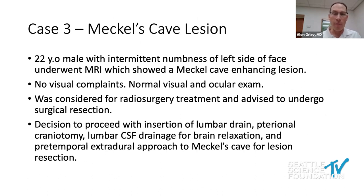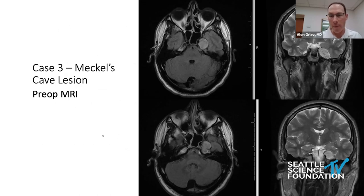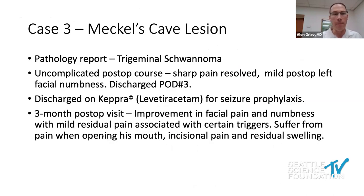I was fortunate to assist Dr. Litvak in a case involving a 22-year-old male with intermittent numbness on the left side of his face. MRI showed a Meckel's cave enhancing lesion — no visual complaints, normal visual and ocular exam. He was considered for radiosurgery but then advised to undergo surgical resection. The decision was to proceed with craniotomy, insertion of a lumbar drain for CSF drainage to achieve brain relaxation, and then a pre-temporal extradural approach to Meckel's cave. This is the pre-op MRI showing the lesion in Meckel's cave. A great paper describes this pre-temporal approach where we perform a craniotomy and, by relaxing the brain, work pre-temporally and sub-temporally to reach the Gasserian ganglion.